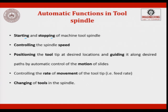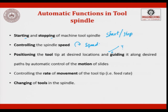The automatic functions also include controlling the rate of movement of the tool tip, then changing the tool in the spindle. So these are the 5 automatic functions with respect to a tool spindle: start, stop, controlling speed, positioning (x and y data), feed rate, and change of tool.